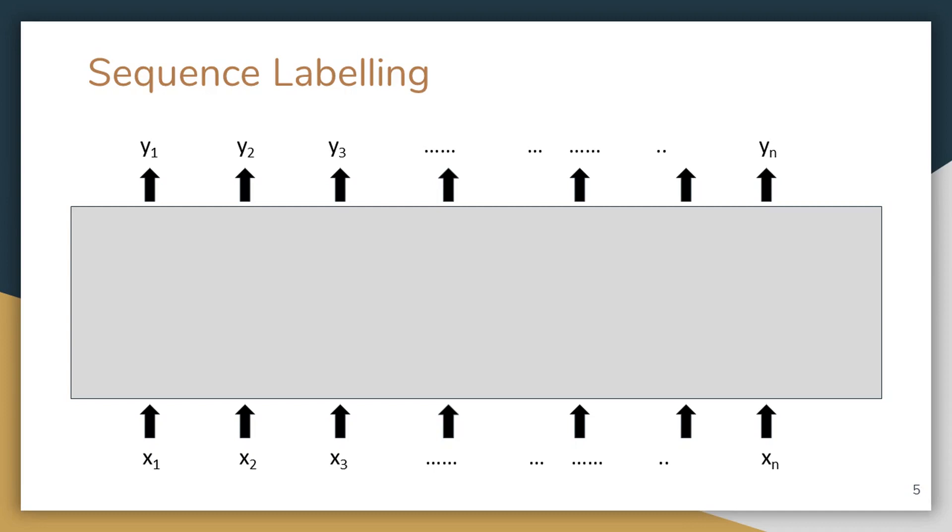So the label yi is either a keyphrase word or not a keyphrase word. That's a binary label, and a series or consecutive series of keyphrase words constitute a keyphrase. This is how we obtain keyphrases once we get the labels.